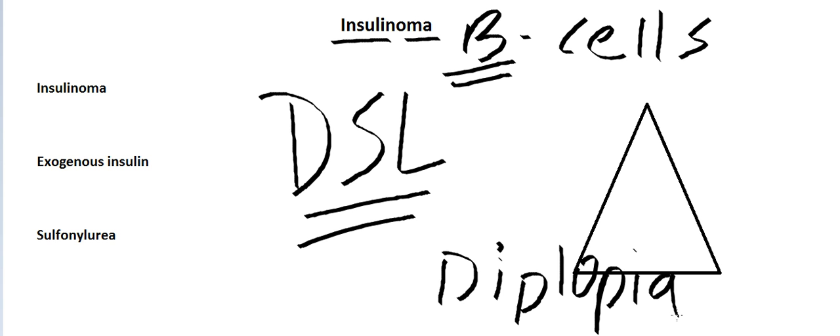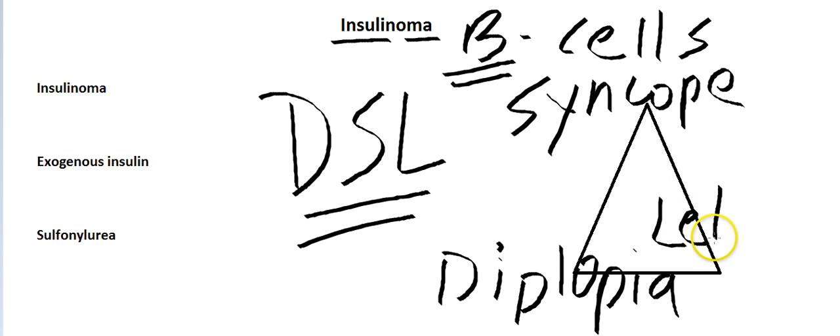The S stands for syncope. So when your brain does not get enough oxygen, it's not getting any nutrients, you're gonna actually pass out - that's what syncope means. And the L stands for lethargy - you're gonna be so tired.